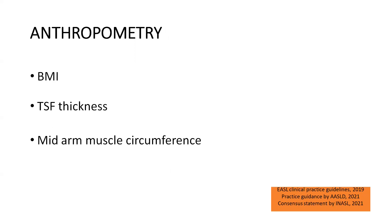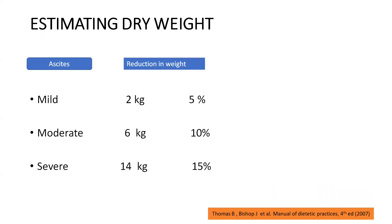First and foremost is anthropometry, which requires measurement of different body parts. The first measure is BMI, calculated by dividing body weight by height in meters squared. In patients with cirrhosis, we do not simply use total body weight — we must correct for the presence of ascites, because ascites causes fluid accumulation giving a falsely higher body weight. We subtract weight according to the grade of ascites to obtain corrected body weight for BMI calculation.